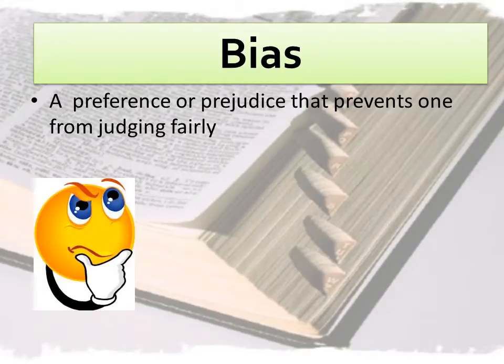The definition of bias is a preference or prejudice that prevents one from judging fairly. Bias means that you have an attitude or a point of view that makes you see things differently, often unfairly. You can be biased against something or biased in favor of something.